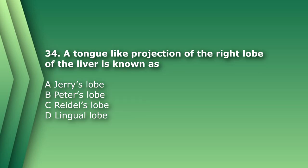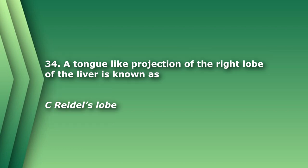Number 34. A tongue-like projection of the right lobe of the liver is known as: A. Jerry's lobe. B. Peter's lobe. C. Riedel's lobe. D. Lingual lobe. The answer is C, Riedel's lobe. A choice like D, lingual lobe, can be added to a question to trip you up, so be sure to practice your anatomy.